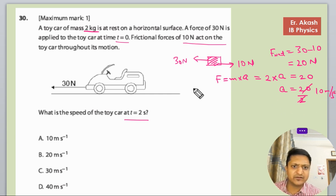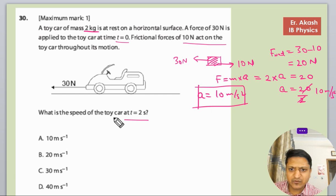So the acceleration we have calculated is 10. So now we have to find the speed of the toy car at t equals to 2 seconds.